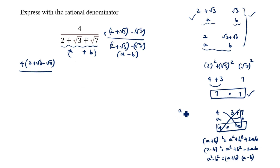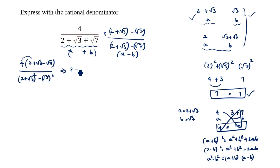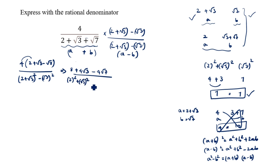Here a = 2 plus root 3 and b = root 7. So the denominator becomes (2 plus root 3)² minus (root 7)². Expanding the numerator: 4 × 2 = 8, plus 4 root 3, minus 4 root 7. For the denominator, (2 plus root 3)² = a² + b² + 2ab = 2² + (root 3)² + 2 × 2 × root 3 = 4 plus 3 plus 4 root 3, minus (root 7)² = 7.